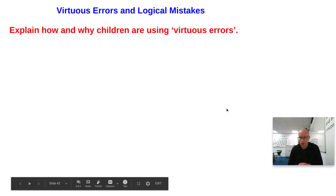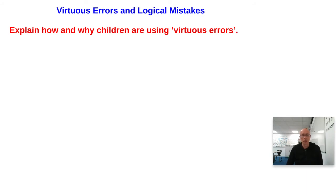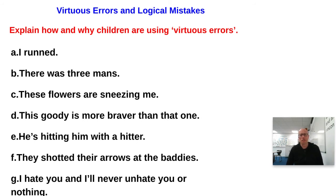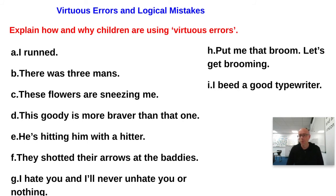In your booklet on pages 22 and 23 there is a list of virtuous errors and logical mistakes — perfectly logical but non-standard forms children tend to say between ages two and five. Examples include: 'I runned,' 'there was three man's,' 'these flowers are sneezing me,' 'this goody is more braver than that one,' 'he's hitting him with a hitter,' 'they shotted their arrows at the baddies,' 'I'll never unhate you,' 'put me that broom,' 'let's get brooming,' and 'I bead a good typewriter.'